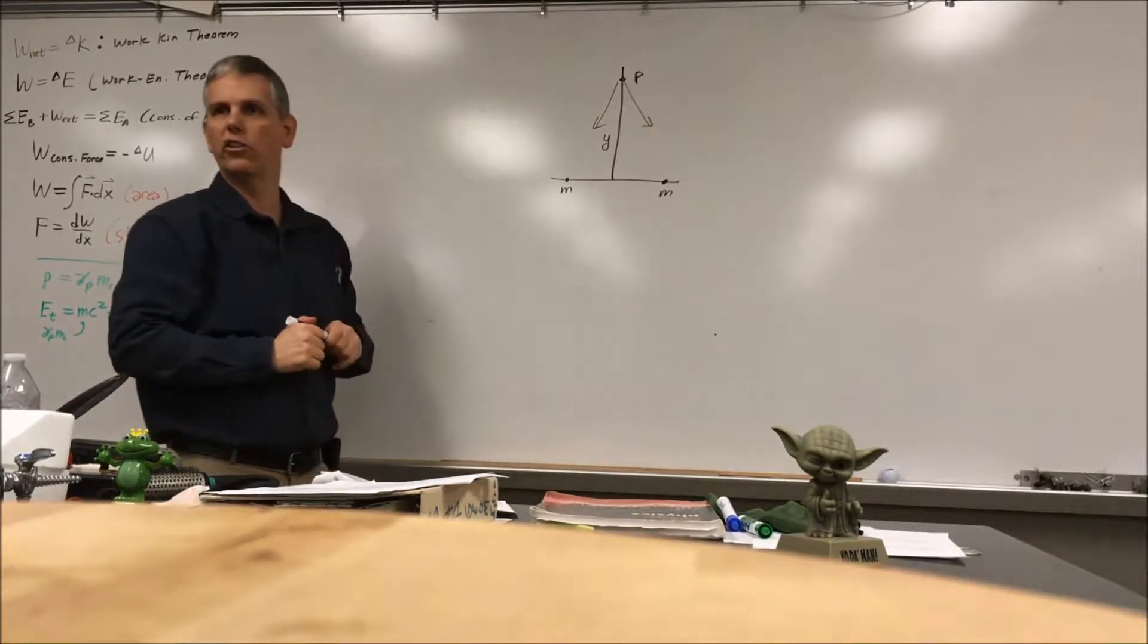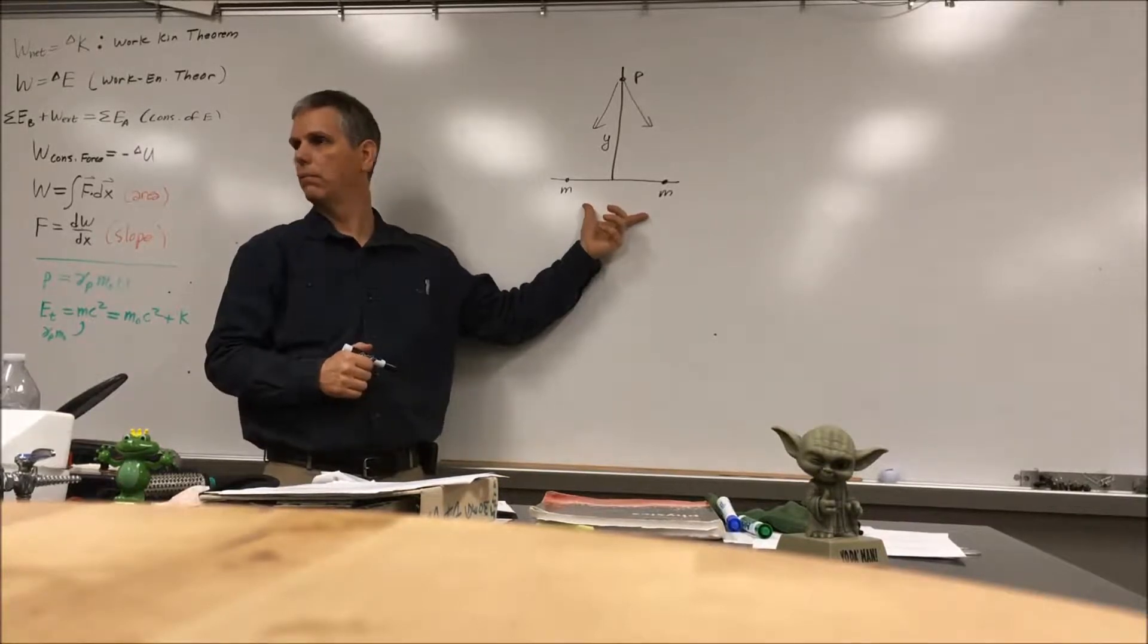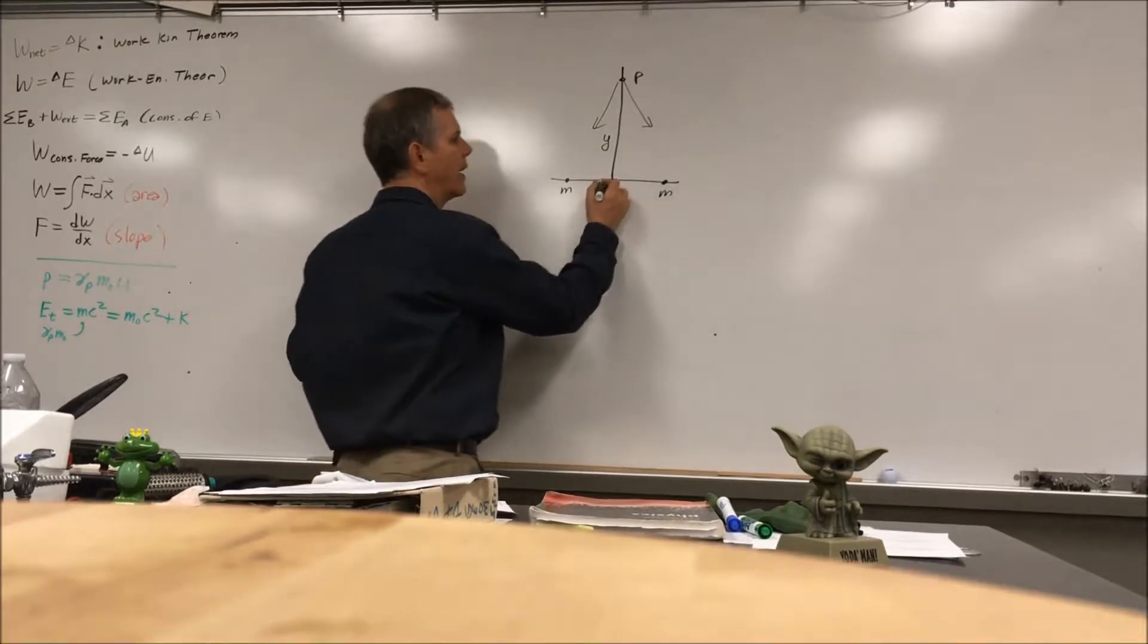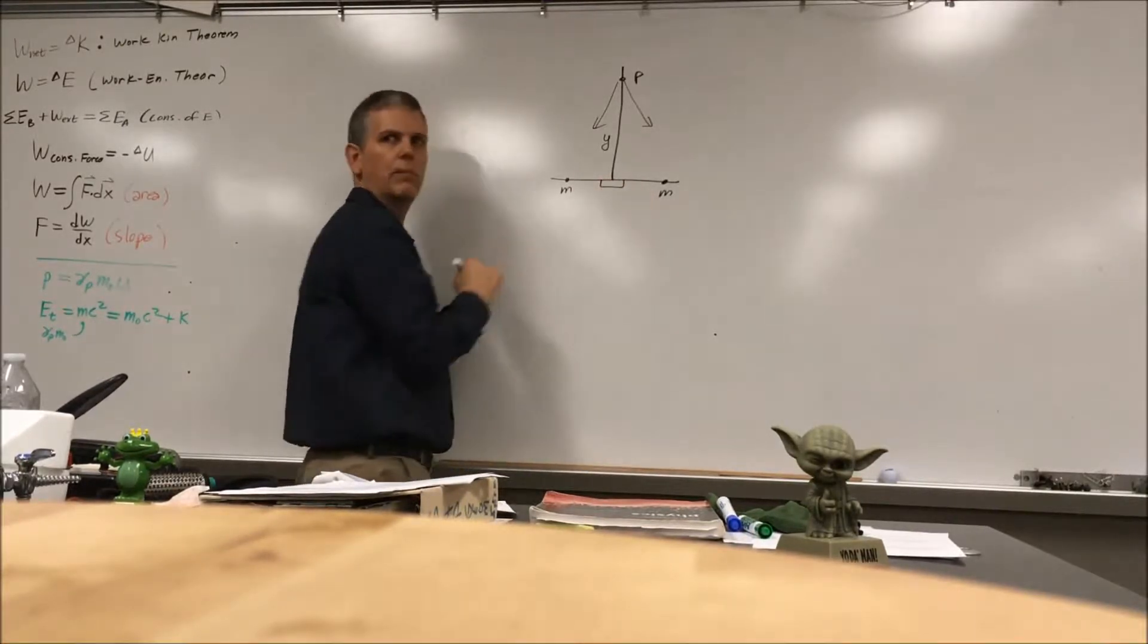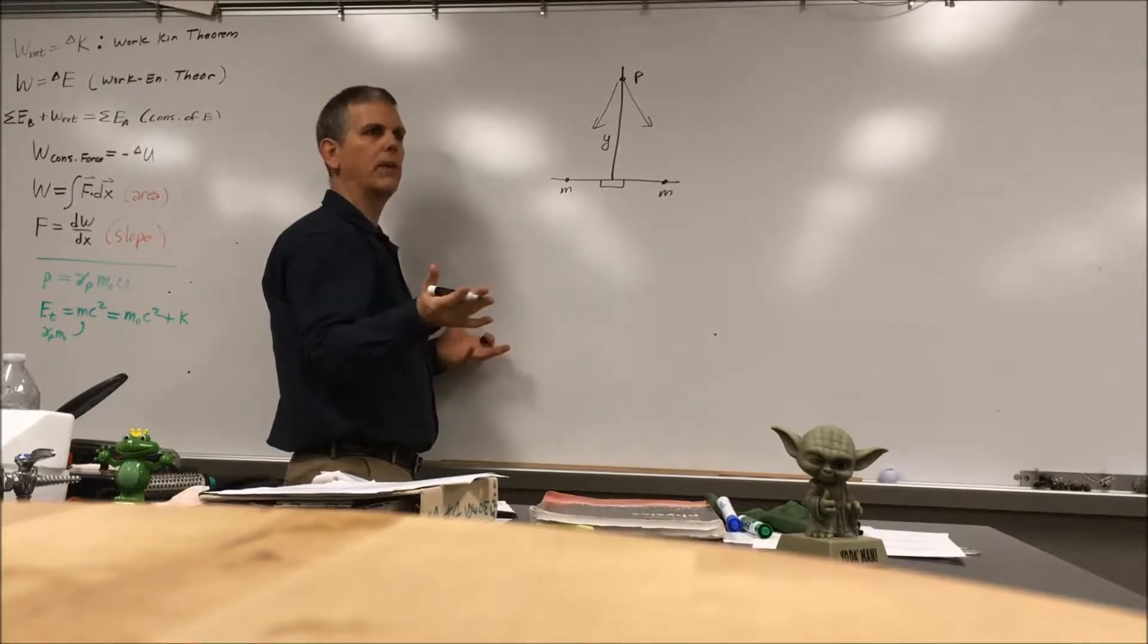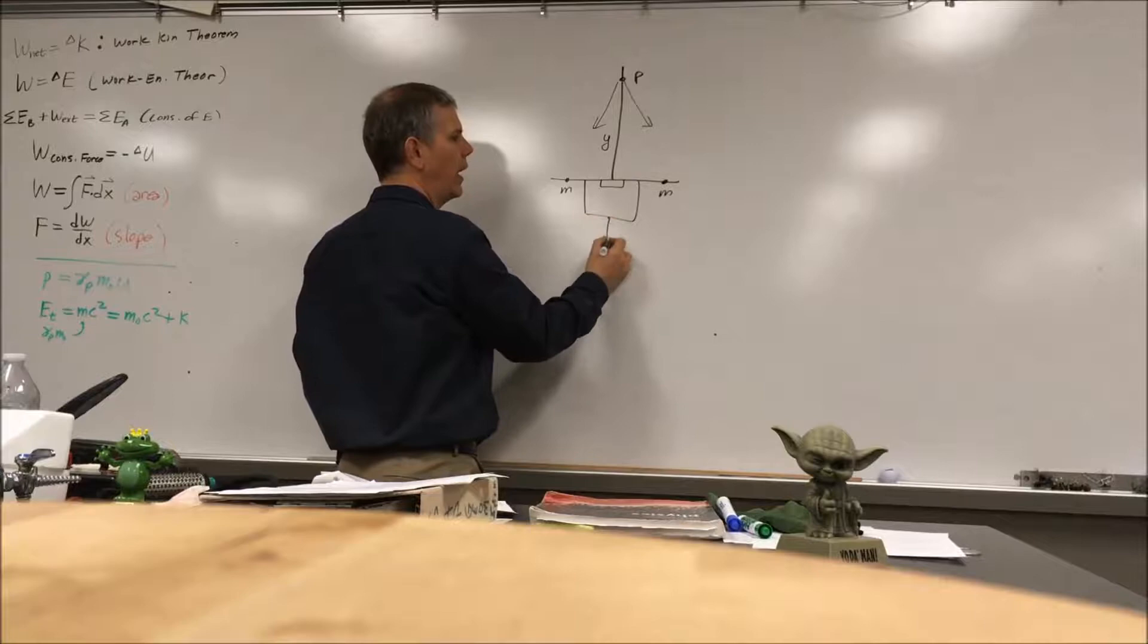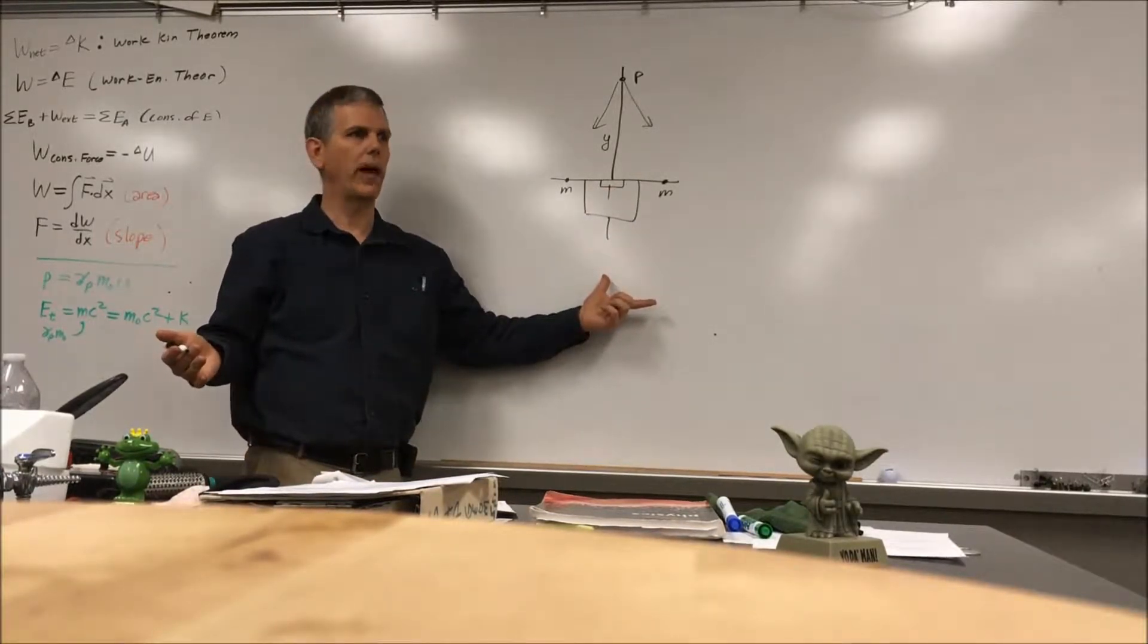Do we agree that if these are equal distance from the y-axis that the x components would cancel and the y components would add? That should be pretty obvious. So likewise, every mass, if we pick a pair of masses and they are equal distances, their x components would cancel and their y components would add. I pick another pair, likewise, their x components would cancel, their y components would add.